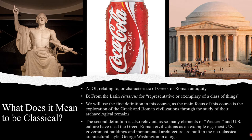The second definition is also useful and relevant to us, as many elements of so-called Western and United States culture have used Greco-Roman civilizations as an example and a guide. Some examples can be found on this slide. The Jefferson Memorial in Washington DC, like most other United States monumental architecture, is built in a neoclassical style. Note its dome, columns, and pediment. Also note this statue of George Washington wearing a toga. Washington never would have worn a toga during his life, but because of the fascination that Americans have had with Classical civilizations, they've depicted the father of our country wearing ancient Roman garb.